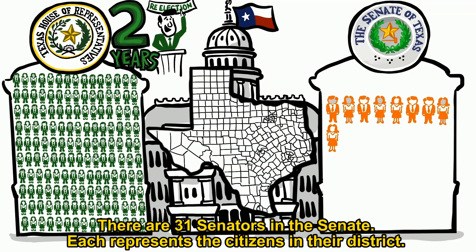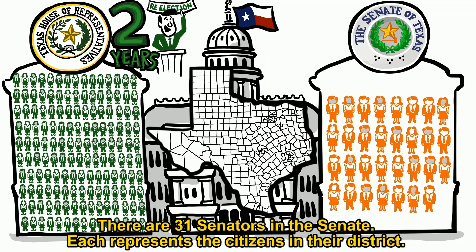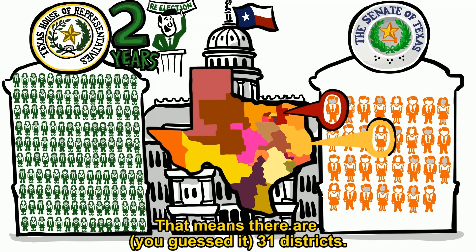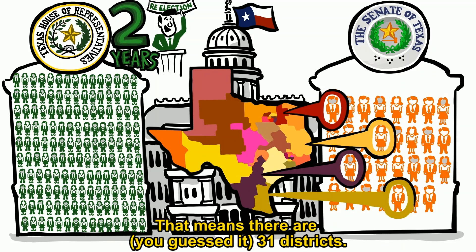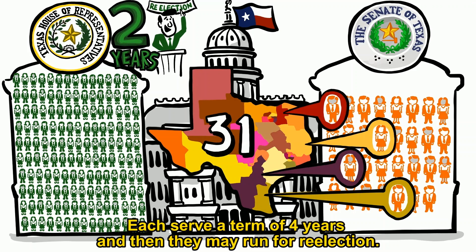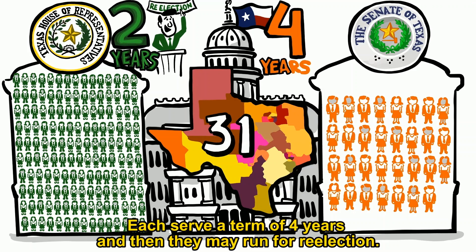There are 31 senators in the Senate. Each represents the citizens in their district. That means there are, you guessed it, 31 districts. Each serves a term of four years, and then they may run for re-election.